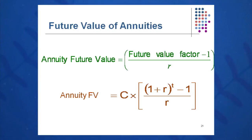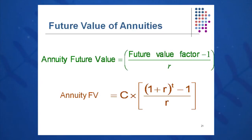The annuity future value equation — the same amount invested each month or each year, taken into the future to come up with some future value — is: Annuity Future Value = C × [(1 + R)^T − 1] / R.